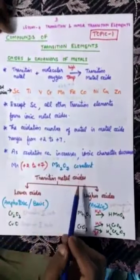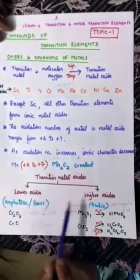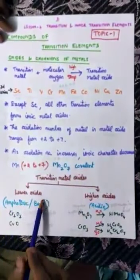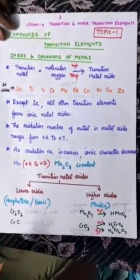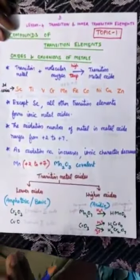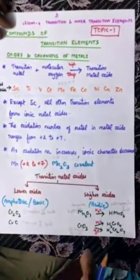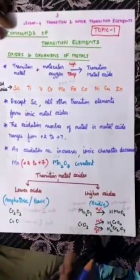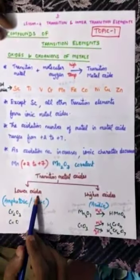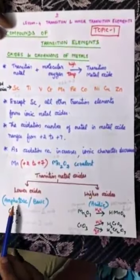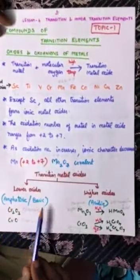Transition metal oxides are classified into two types: lower oxides and higher oxides. Lower oxides have oxidation numbers such as plus 2 or plus 3. Higher oxides have plus 5, plus 6, or plus 7. Lower oxides, if they have a low oxidation state, will behave either as amphoteric or basic metal oxides. If they have a higher oxidation state, they will behave as acidic metal oxides.